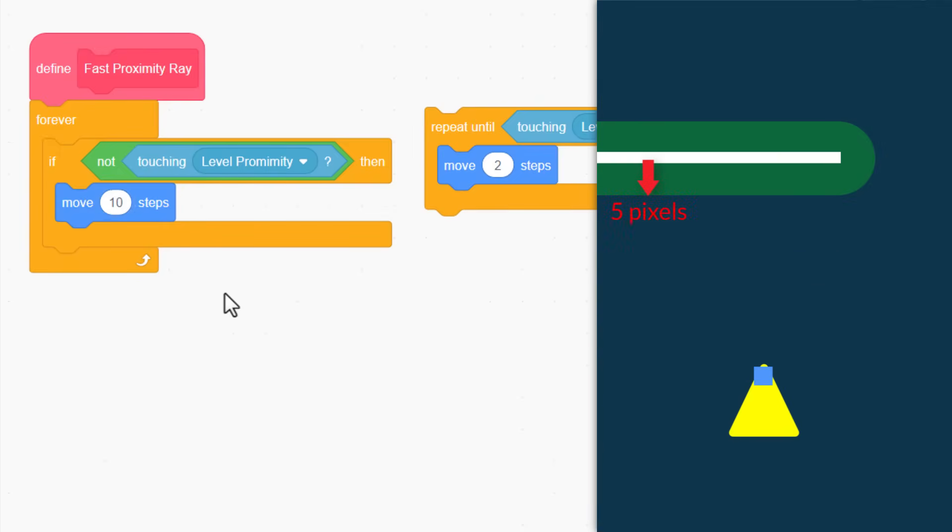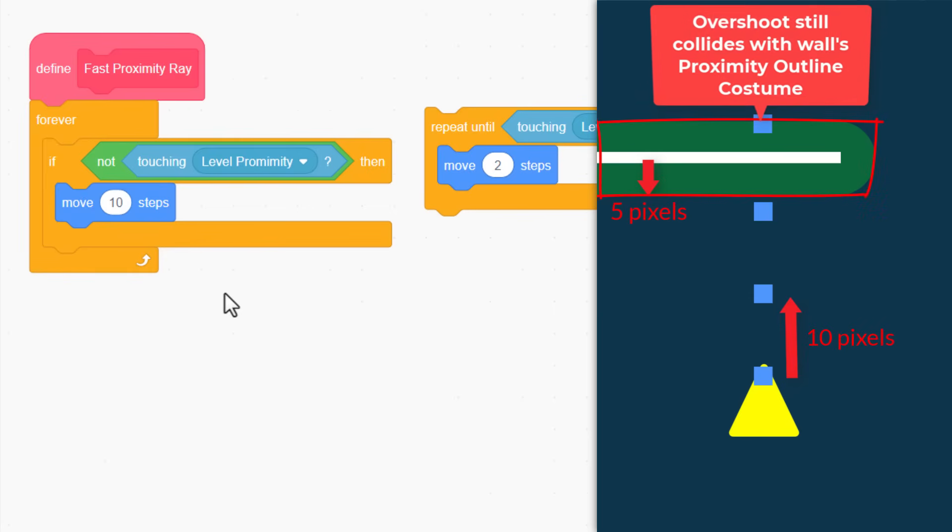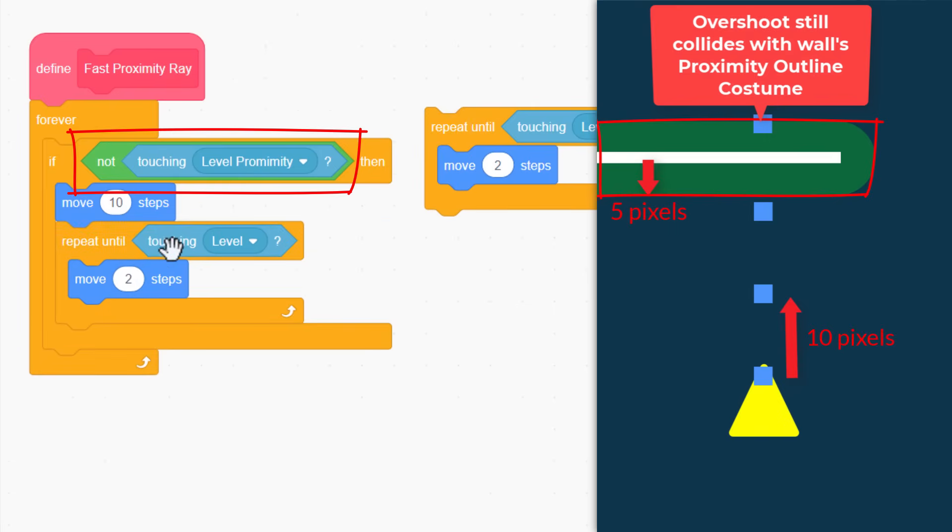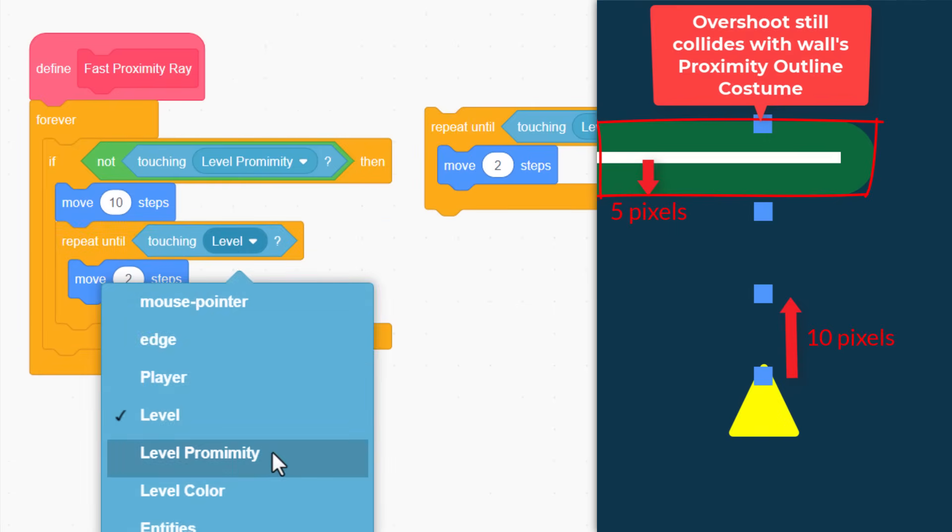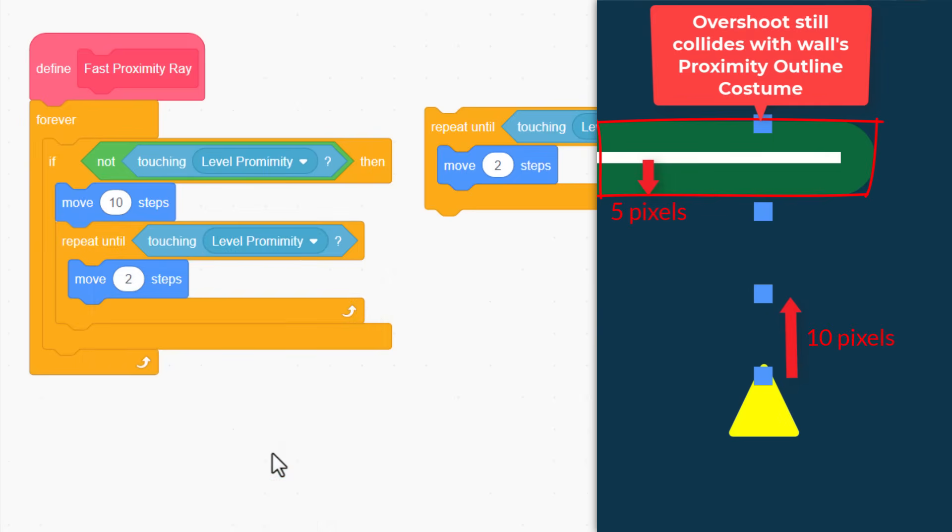Now why 10 and not 5? Well, even if we overshoot a wall by 5 pixels, we will still be guaranteed to be within the perimeter of the actual wall if a collision should occur. That's handy. So, if we were not touching the proximity sprite, let's repeat until we are touching it. That's right, the proximity sprite. And we continue to move fast, 10 steps at a time. Oh yeah, this is what dreams are made of!